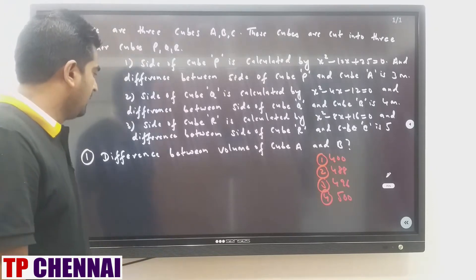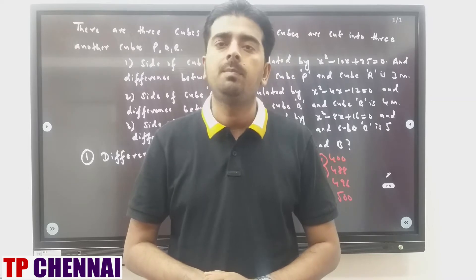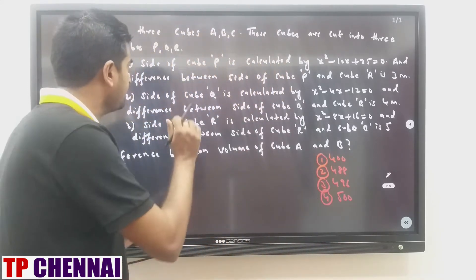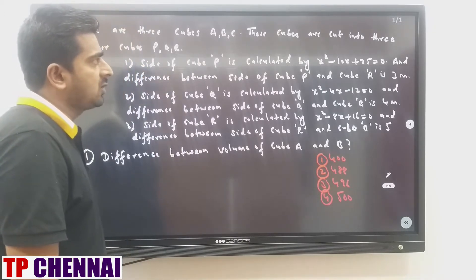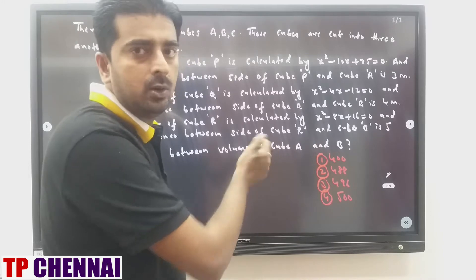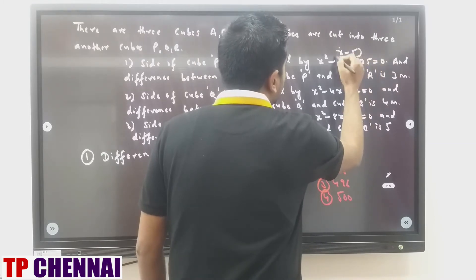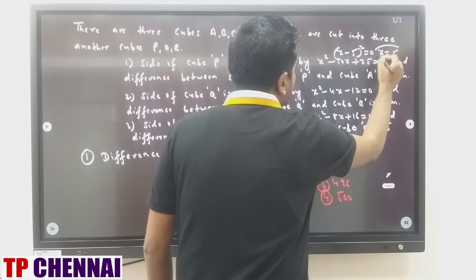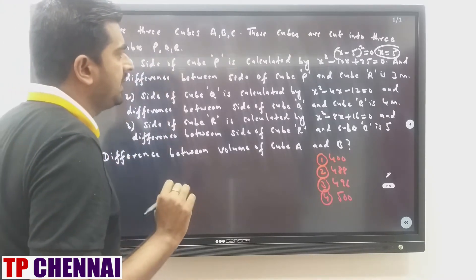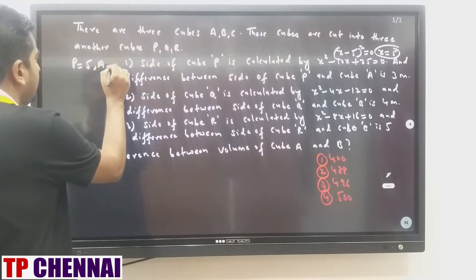First question: difference between volume of cube A and B — purely based on mensuration. Mensuration is a formula-based chapter, so you must understand the concept. First condition: side of cube P is from X² minus 10X plus 25 = 0, which is (X minus 5)² = 0, so X = 5. That means side P is 5. Difference between side of P and A is 3 meters, and A will be more since P was cut from A, so A = 8.